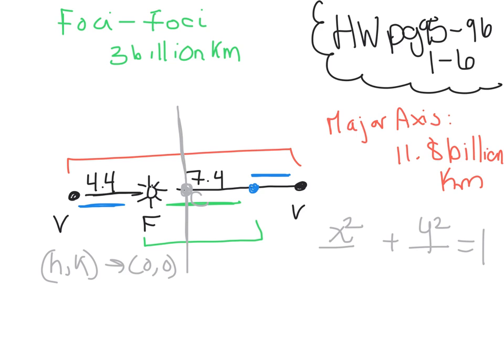Remember, whichever way it goes, in our case side to side, the bigger number goes on the bottom of that letter. Since mine goes side to side, the x, then my a value, my bigger number, is going to go under my x. Well, luckily for us, the major axis, which we know to be 2a, equals 11.8 billion. If I take my 11.8 and divide it by 2, you're going to get 5.9. So this is going to be 5.9 billion, or you could write in scientific notation.